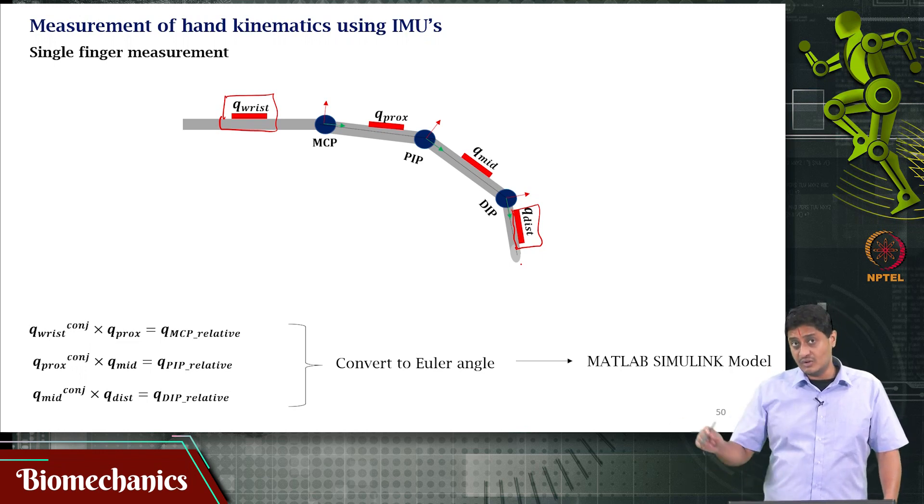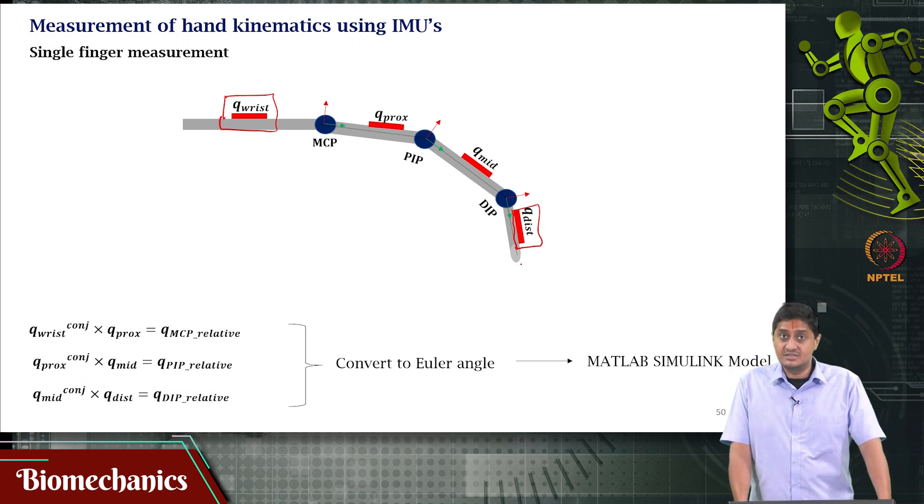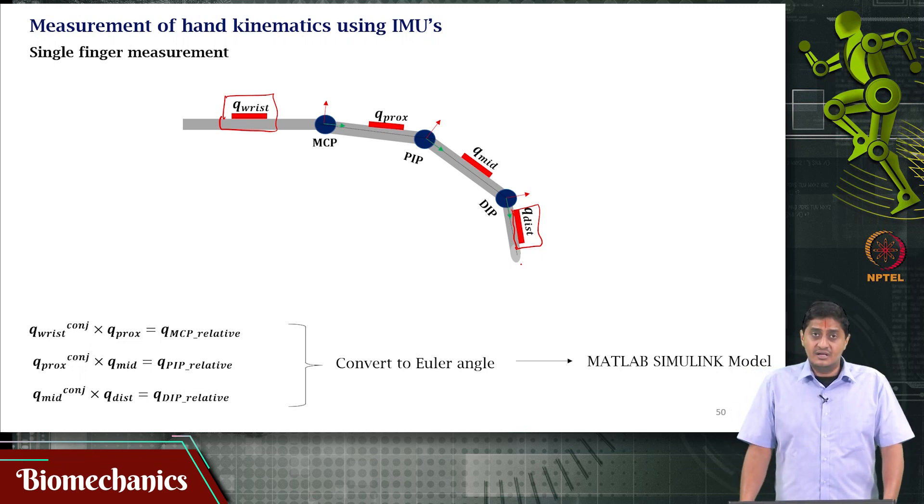If you're using Euler angles and measuring only the distal segment kinematics, you may get into these singularity issues, gimbal lock issues. It's better to avoid Euler angles as a method of choice in this. It's best to use quaternions. A better method would be if you have access to some more IMUs.